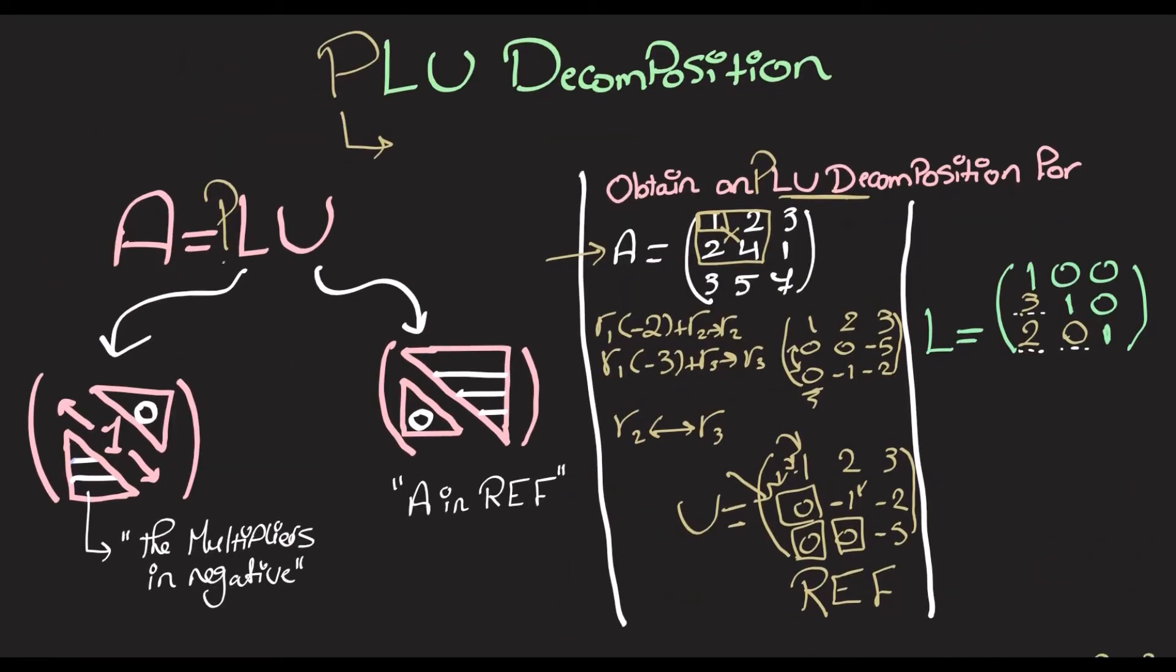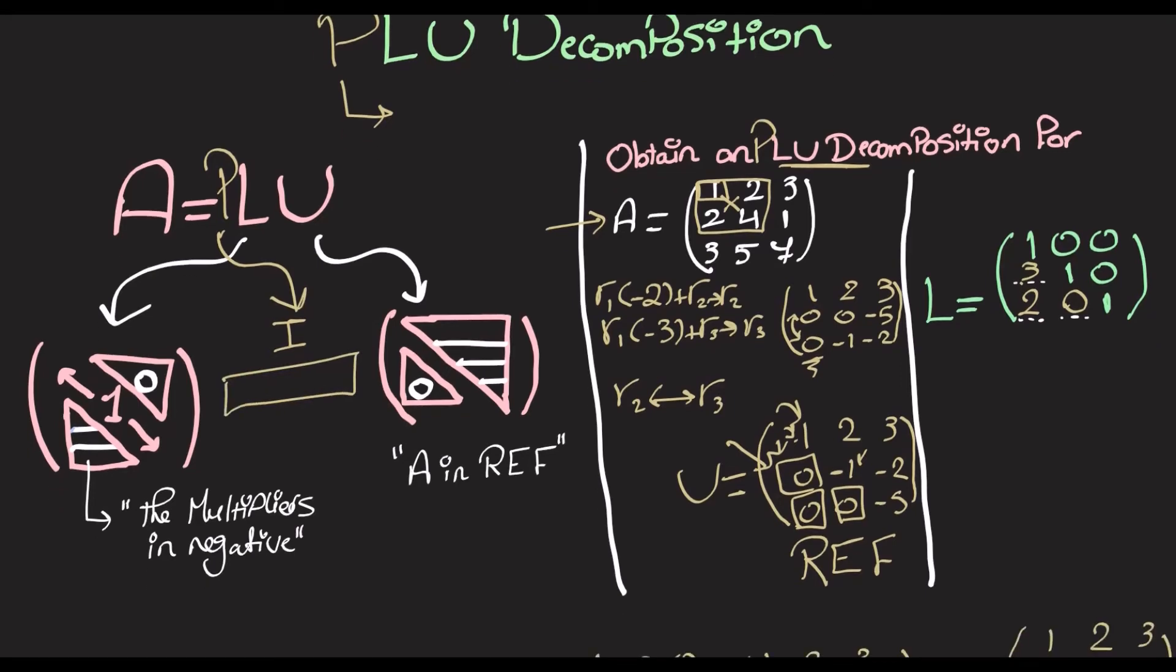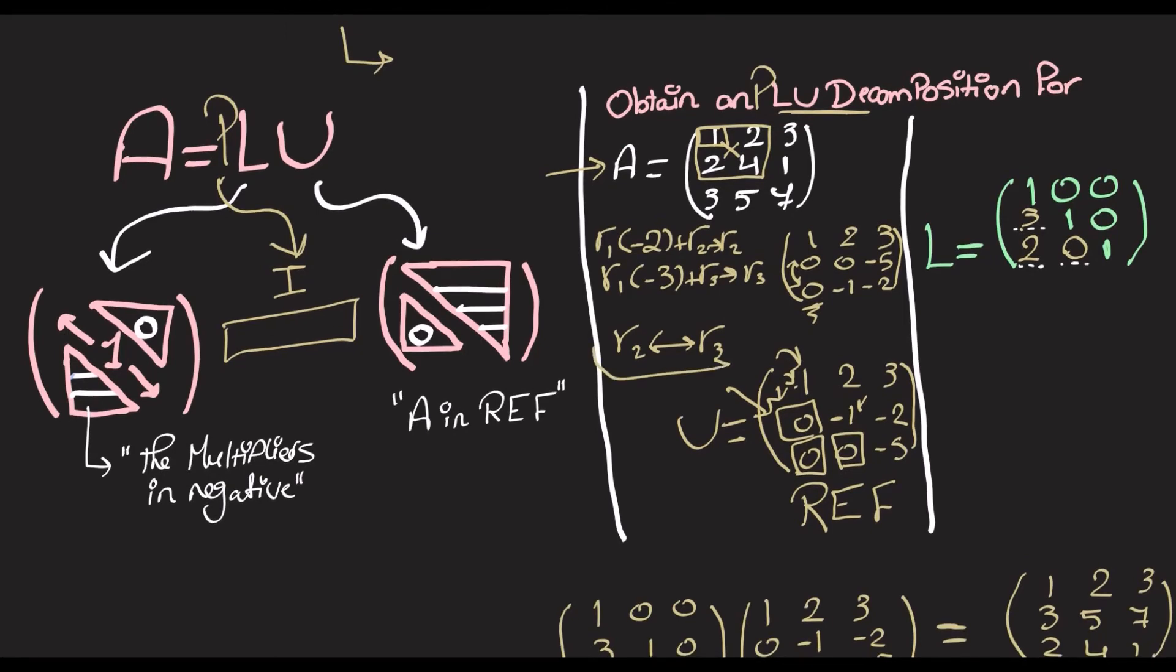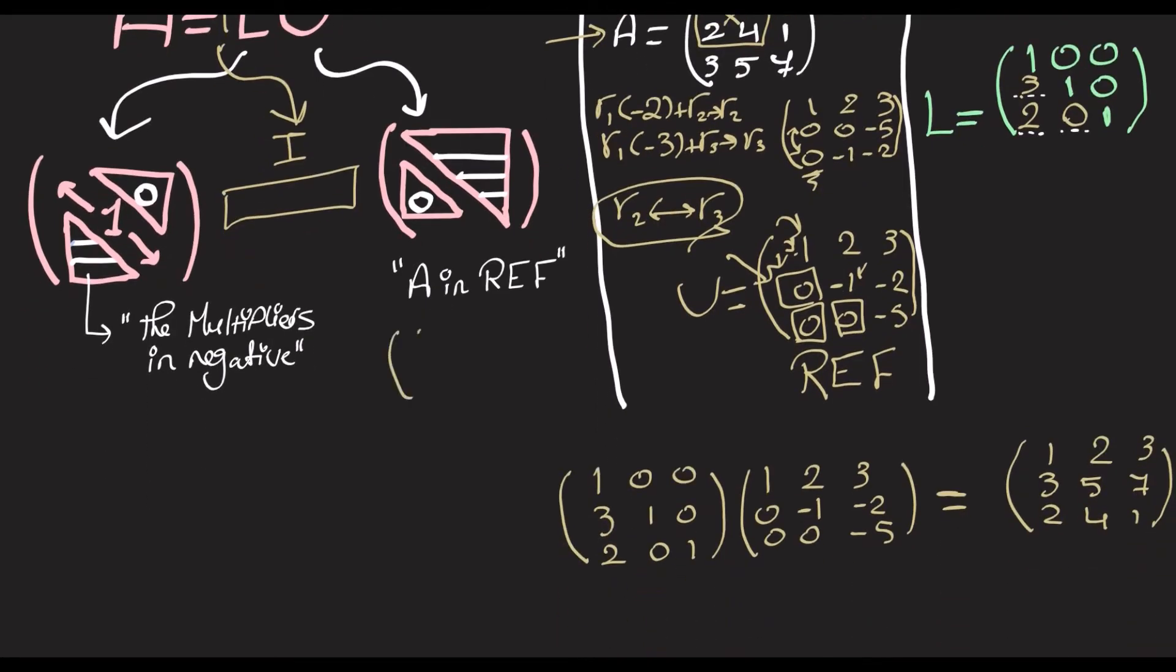So, basically, how we find this P is start with I, then apply all row interchanges on it that we did during this operation. So, we interchange row 2 and row 3. So, I is 1, 0, 0, 0, 1, 0, 0, 0, 1. We're going to also interchange these.